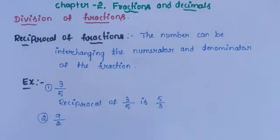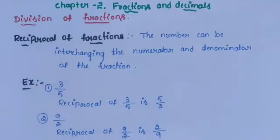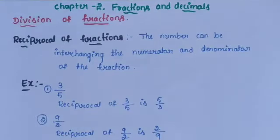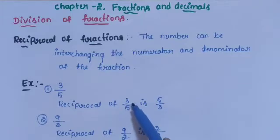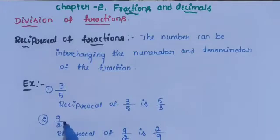The reciprocal of 3 by 5 is 5 by 3. Another example: 9 by 2. The reciprocal of 9 by 2 is 2 by 9. Here, 3 is the numerator and 5 is the denominator; interchanging gives 5 by 3. Similarly, 9 is the numerator and 2 is the denominator, so the reciprocal of 9 by 2 is 2 by 9.